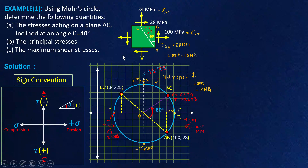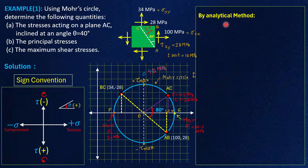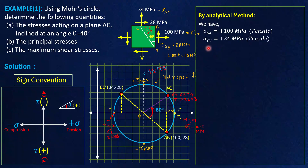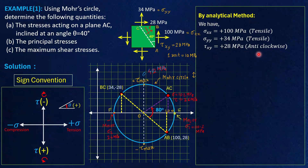We have most of the required values from the graph. Now I will also solve this problem analytically to check whether the values we got are correct. So let's try the analytical method. From the figure: normal stress in the x-direction, sigma xx, is 100 MPa tensile; sigma yy, the normal stress in the y-direction, is 34 MPa tensile; tau xy is 28 MPa anti-clockwise, so it is taken as positive.